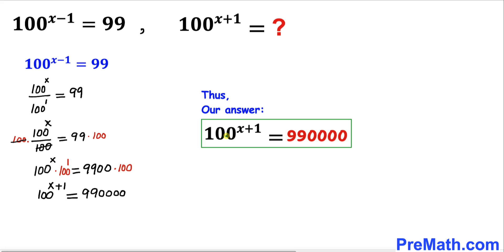So that's our answer. 100 power x plus 1 turns out to be 990,000.